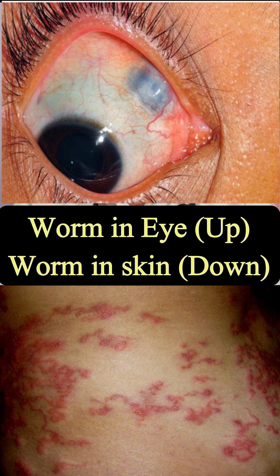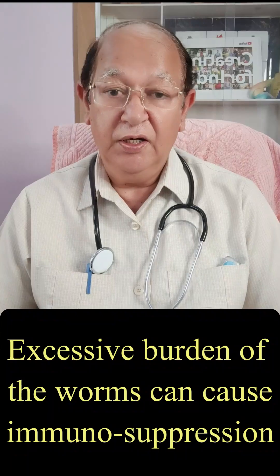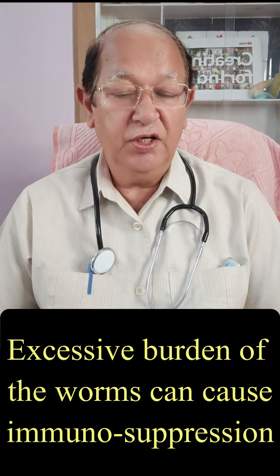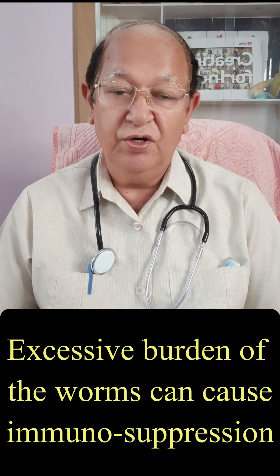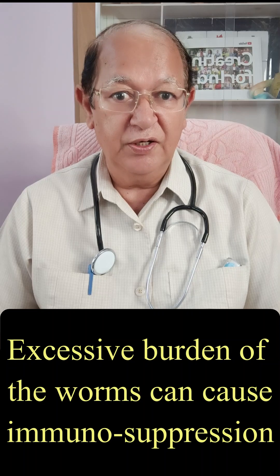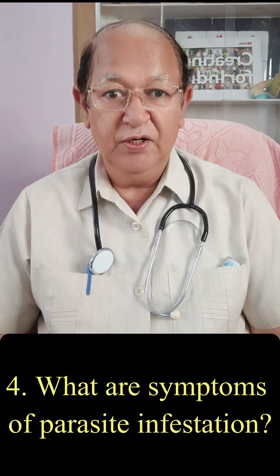Movement of larvae of some of these parasites into the visceral organs can cause serious damage to those organs. Infestation of heartworms in dogs can be fatal or life-threatening to pet dogs. Excessive burden of worms can cause immunosuppression, and such dogs will pick up infections very quickly.